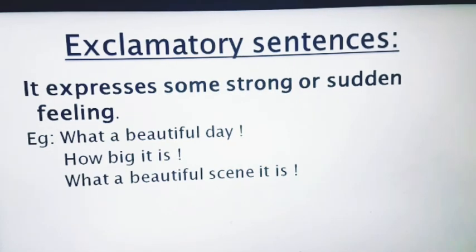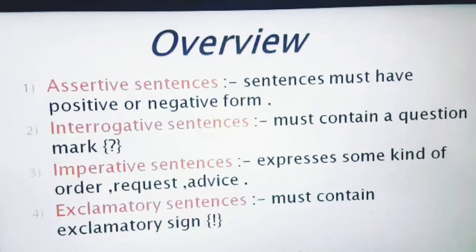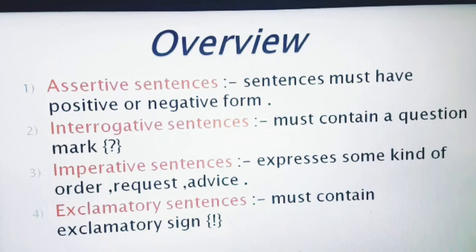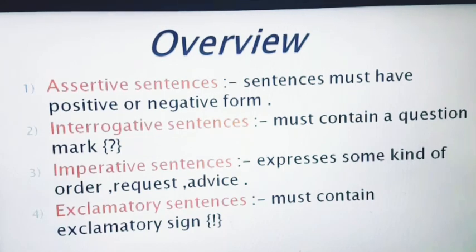Inko jaldi se revise karte hain. Assertive sentences — declarative bhi bolte hain — do kinds ke hote hain: affirmative and negative, jinmein positivity ya negativity honi zaroori hai. Second, interrogative — must have question mark, aur aapse koi question puchha jaata hai. Third, imperative — jinmein order, request, advice, ya threat milega. Fourth, exclamatory — jinmein exclamatory sign hona zaroori hai.